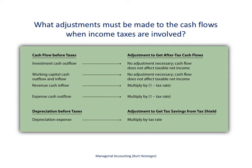Here is a summary of the adjustments that have to be made to different types of cash flows for a company that pays income taxes. The first item relates to investment cash outflows. For example, if we are purchasing a piece of equipment, we have to pay for that — that's the cash outflow. No adjustment is necessary for these types of cash flows, as it does not affect our taxable income.